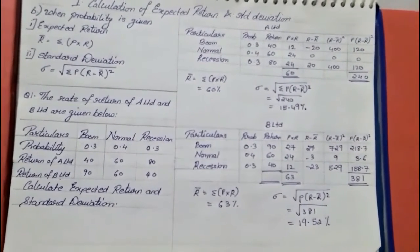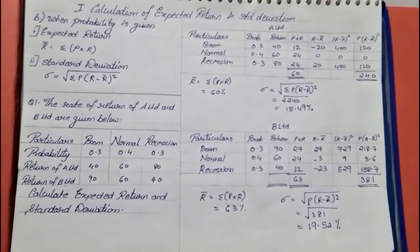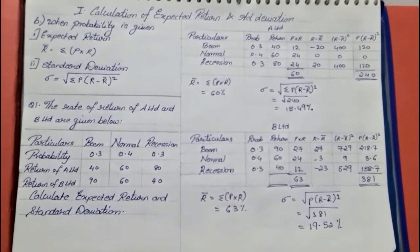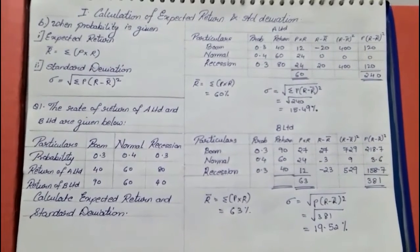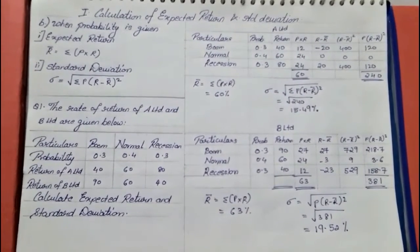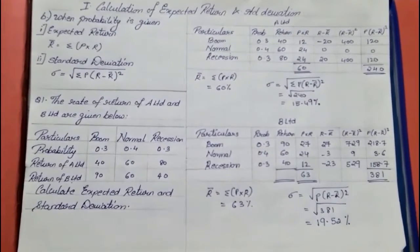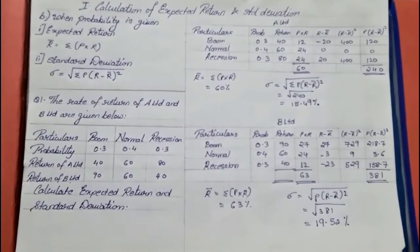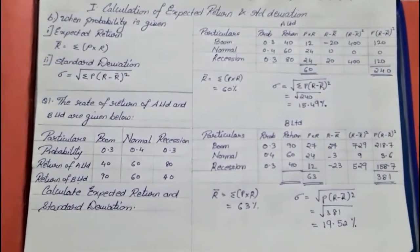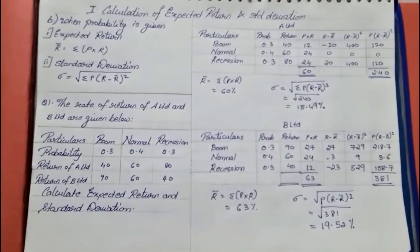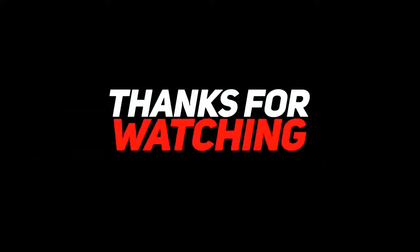So with that we were able to solve sums based on expected return and standard deviation when probability was given. We have now completed the first topic under risk and return analysis — expected return and standard deviation — under two methods: one when probability is not given, and the other when probability is given. I hope everyone has understood this. Stay tuned for other videos. Thank you.